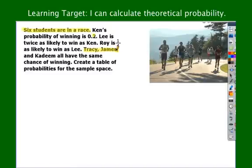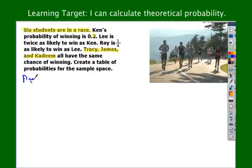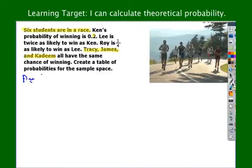Then you have Tracy, James, and Kadeem — and all we know about them is that they all have the same chance of winning. The issue is there's nothing in the problem that tells us how their chances relate to Ken, Roy, and Lee. So I want you to define a variable and write an equation. Don't just write down some numbers — use algebra. Pause the video and see if you and your partner can write an equation that gives you Tracy, James, and Kadeem's probabilities, and therefore all six runners' chances of winning.